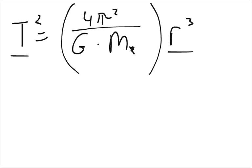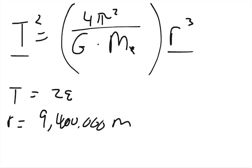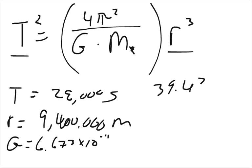So the time, well let's actually just start by labeling some things off because it tells us in the problem that the radius is basically 9,400,000 meters and it tells us that the orbit is 28,000 seconds. And we know that g, the gravitational constant, is 6.673 times 10 to the negative 11th. And the last thing that we know is that 4 pi squared is roughly 39.4384.